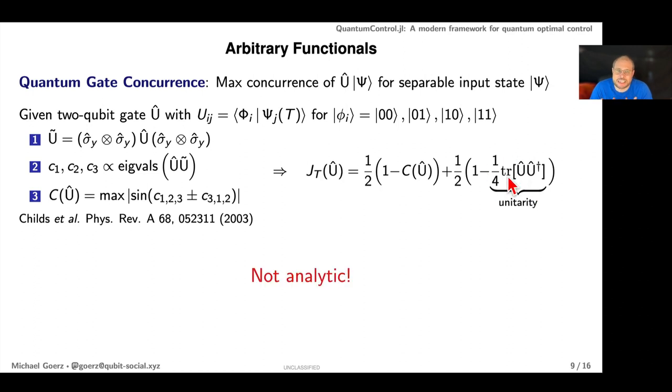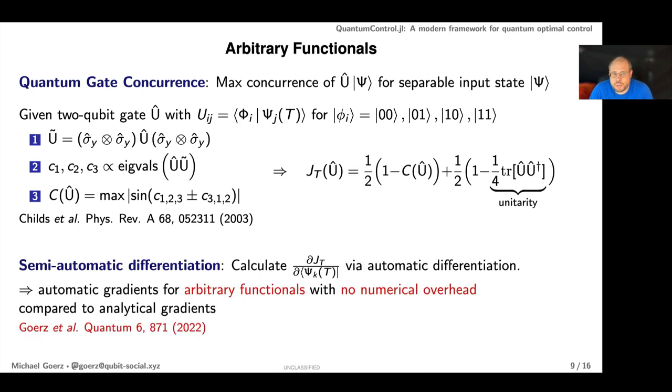But this is not analytic. As soon as you have something like eigenvalues, it's not something where you can just write down the gradient of this functional on paper. A few months ago we developed something called semi-automatic differentiation where the computer figures out the gradients of really any functional at all, but in a very specific way that completely eliminates the numerical overhead you normally have with automatic differentiation. You basically end up with the same numerical cost in terms of memory and CPU usage as if you had an analytical gradient.